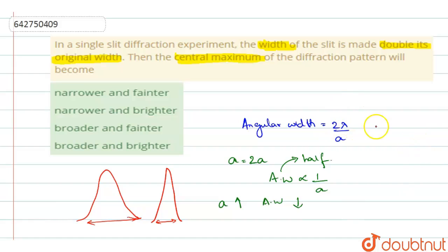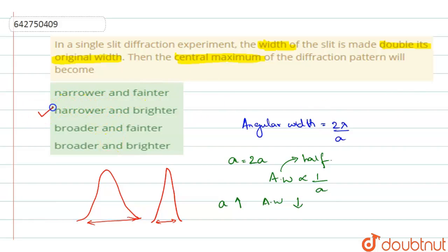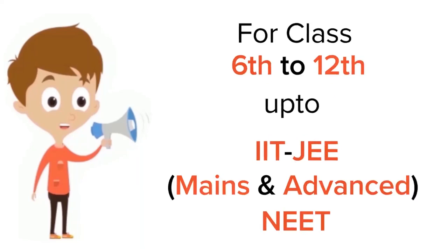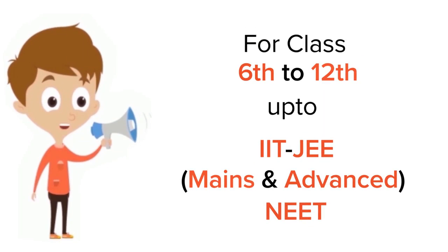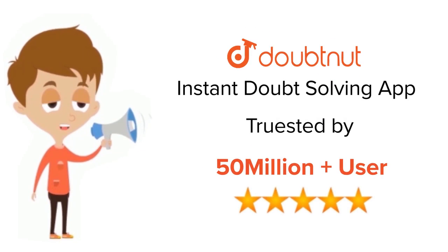So it becomes four times, and the central maxima becomes sharper and brighter. Among the four options, it should become sharper — meaning narrower — and brighter. So option B is the correct answer.